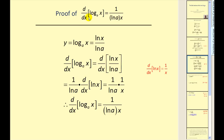For the function log base a of x, we apply the change of base formula to our function, and then find the derivative using our formula for the derivative of natural log x. Natural log a is not affected because we're taking the derivative with respect to x, so we obtain one over natural log a times one over x, which simplifies to our derivative formula.